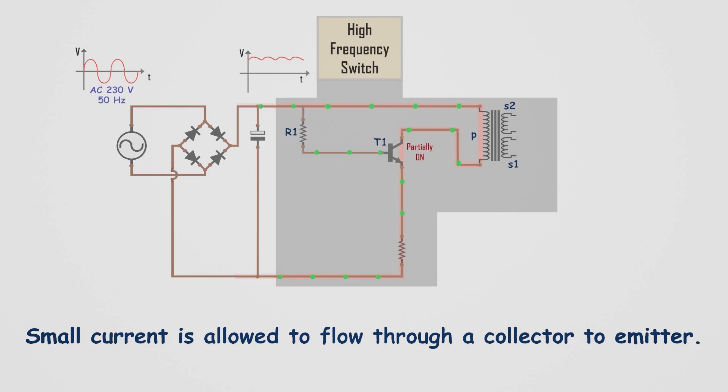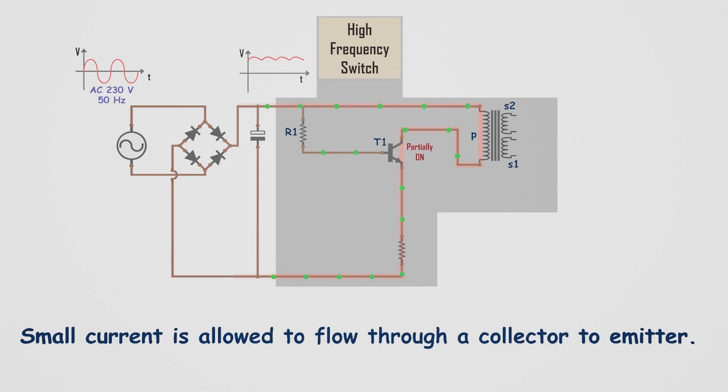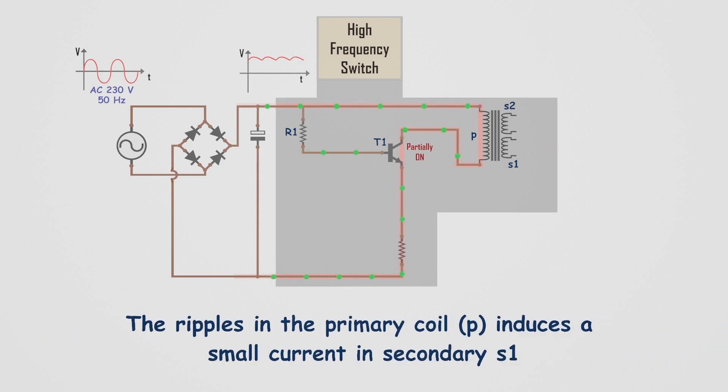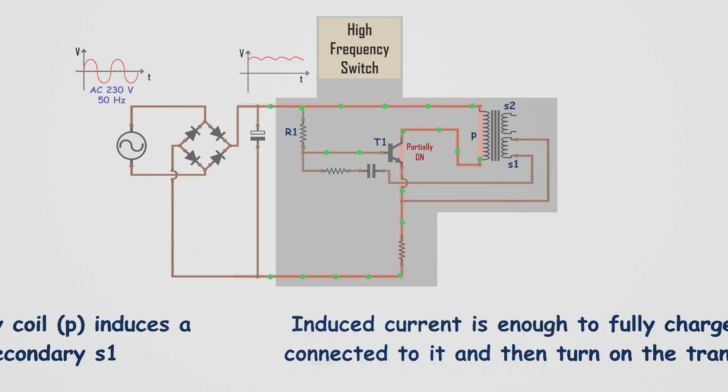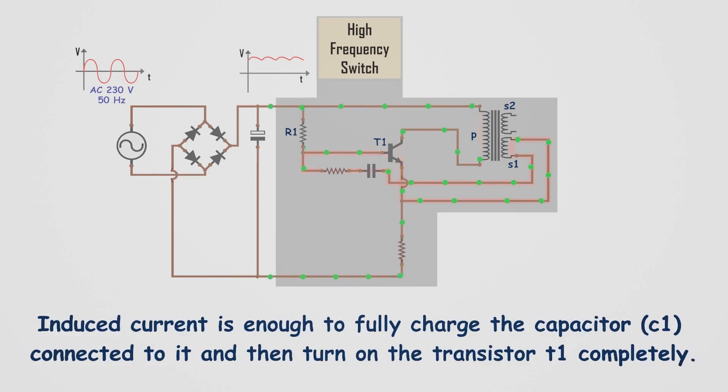There is a small secondary winding S1 placed near the primary coil. The ripples in the primary coil induce a small current in S1. This induced current charges the capacitor C1 connected to S1 and then turns on T1 completely,